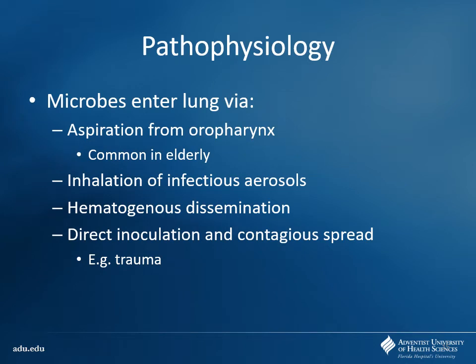How do microbes get in? It could be microaspirations from the oropharynx — this is common in elderly patients, especially post-stroke patients, dementia patients, or those on CNS-depressing drugs. You see inhalation, you have hematogenous dissemination — it started out as a bloodstream infection and then got into the lungs — or you could potentially have some kind of direct inoculation from trauma or something that could introduce bugs there.